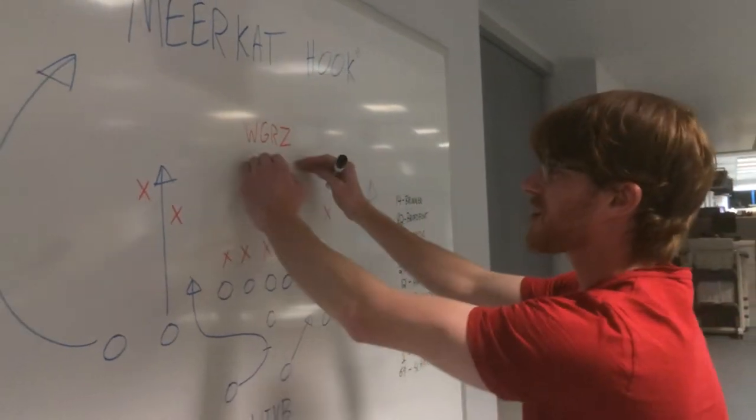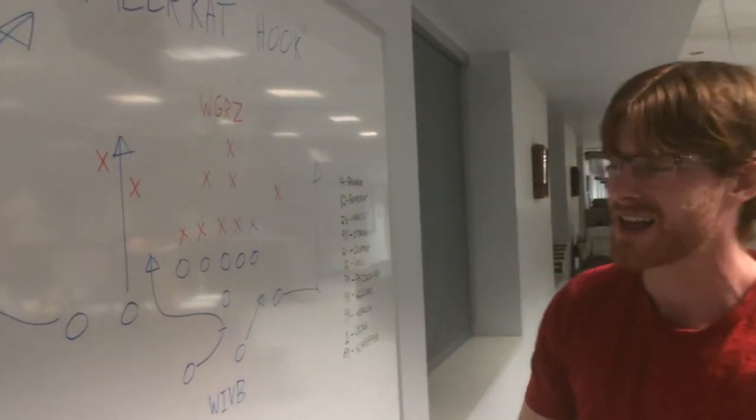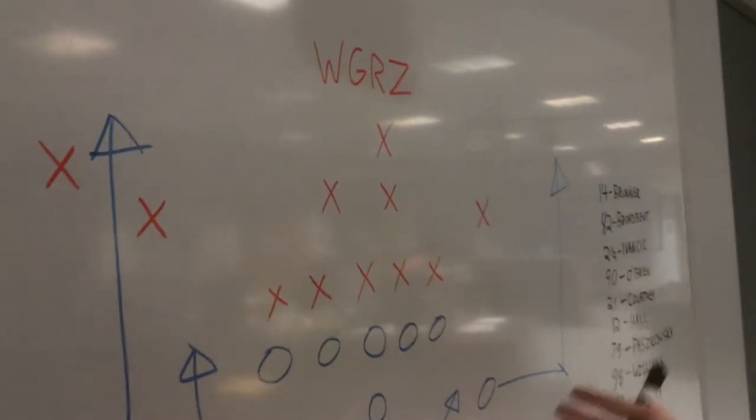But the point is, WGRZ, they're in the red. They're the redcoats. They can't get past the bluecoats because the bluecoats are all going long for the touchdown. Next thing you know, Channel 4 sweep.